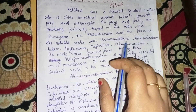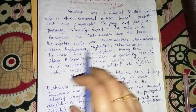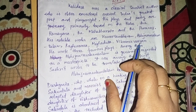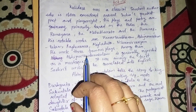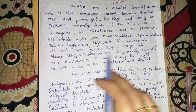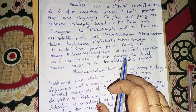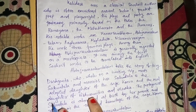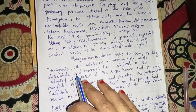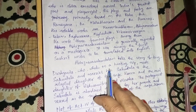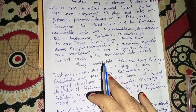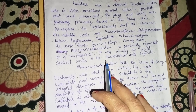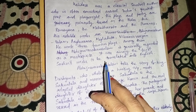His notable works are Kumarasambhavam, Abhignaanam Sakuntalam, Raghuvansha, Meghaduta, and Vikramorvashiyam. He wrote three famous plays. Among them, Abhignaanam Sakuntalam is generally regarded as a masterpiece. It was among the first Sanskrit books to be translated into English.